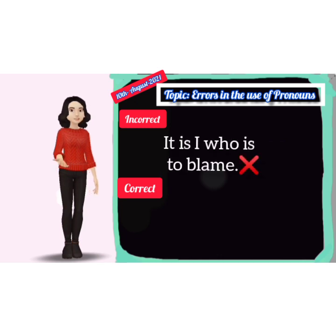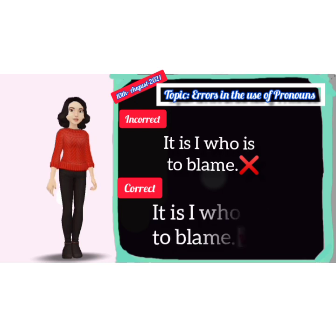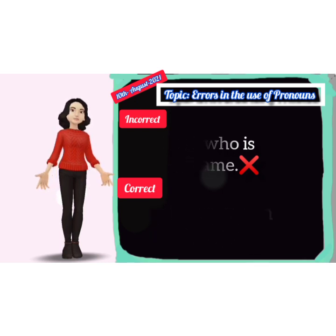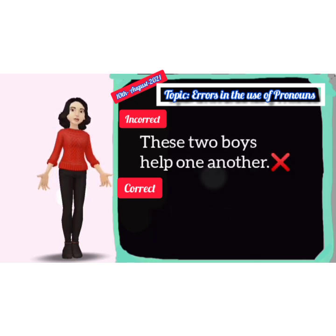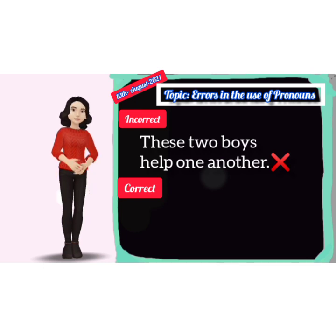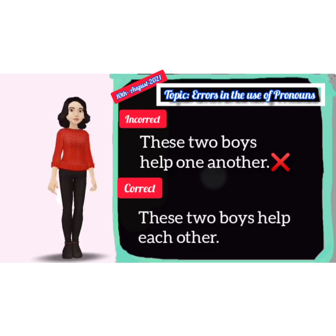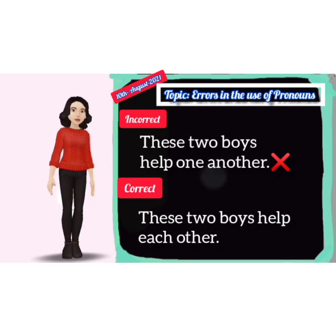Eighteenth: incorrect — 'It is I who is to blame.' Correct — 'It is I who am to blame.' Nineteenth: incorrect — 'These two boys help one another.' Correct — 'These two boys help each other.'